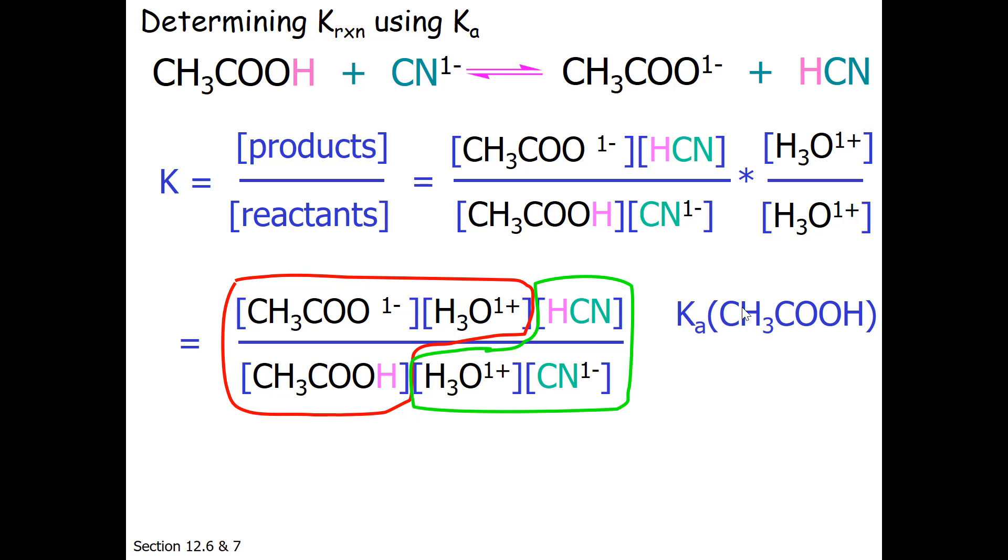I'm now going to group the hydrocyanic acid and hydronium expression together. This turns out to be 1 divided by the Ka of hydrocyanic acid strength versus water. So if I knew those two numeric values, I could use them to find out the equilibrium constant of this reaction.